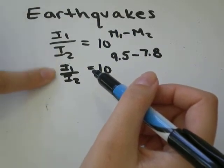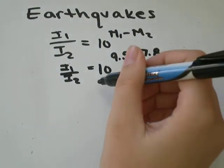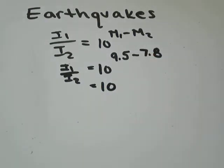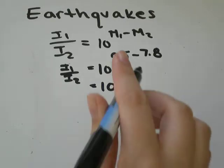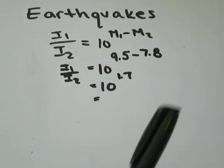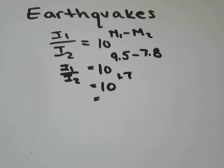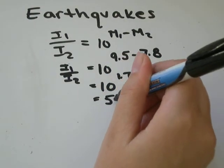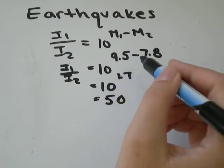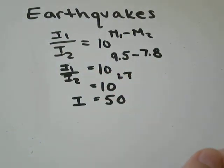All I need to do is compute 10 to the exponent of 9.5 minus 7.8, which is 1.7. And 10 to the exponent 1.7 equals 50. So a magnitude 9.5 earthquake would have 50 times the intensity of a magnitude 7.8 earthquake.